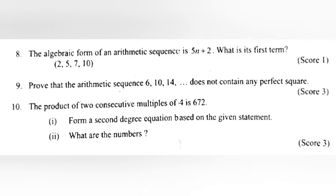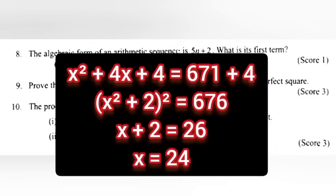Part 2: What are the numbers? Answer: x² + 4x + 4 = 676, so (x + 2)² = 676, therefore x + 2 = 26, and x = 24.